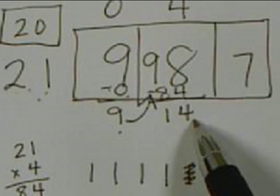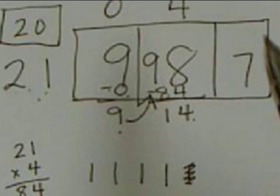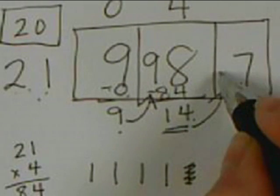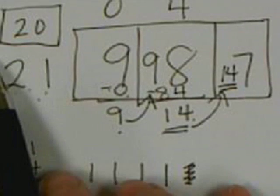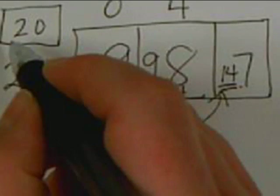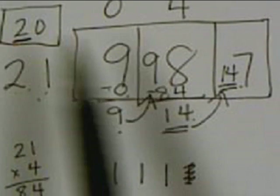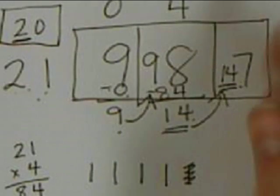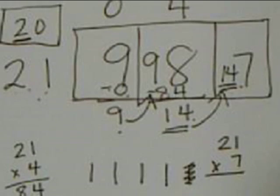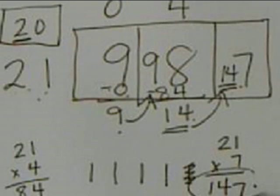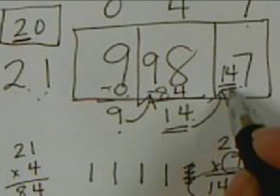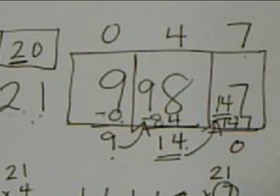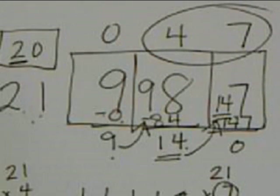Now we move two digits to the next box. In this next box I want them to think about 20, and look at 14. How many times will 2 go into 14? They should know 2 times 7 is as close to 14 as they can get. Over to the side they try 21 times 7: 7 times 1 is 7, 2 times 7 is 14 — we get 147. So at the top we put a 7, then subtract — we get 0. There's no remainder, so the quotient for this problem is 47.